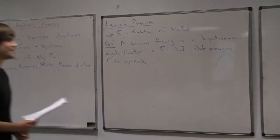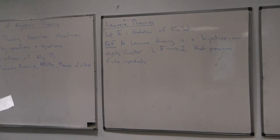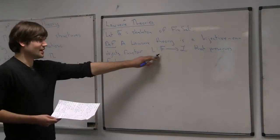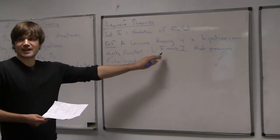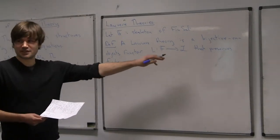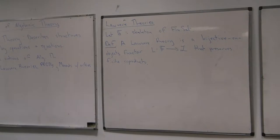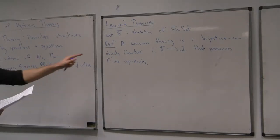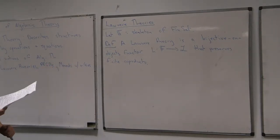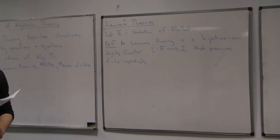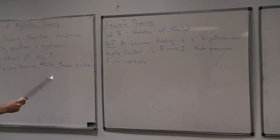The reason this might be controversial is that usually people would define this as a functor out of F^op which preserves finite products. The reason I'm doing it this way around is because it works better for the stuff I'm doing later. Thankfully I have Lawvere on my side, because in his thesis when he first defined these, he did it this way around, so I'm in good company.